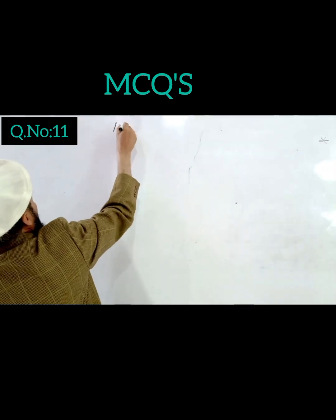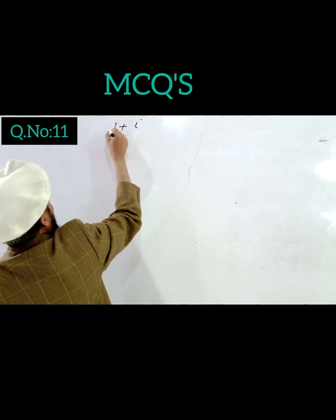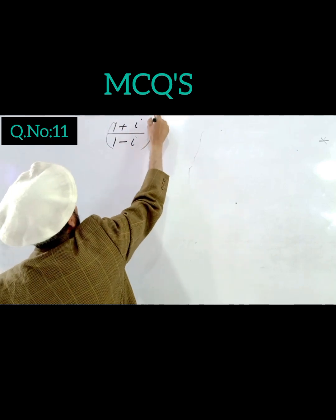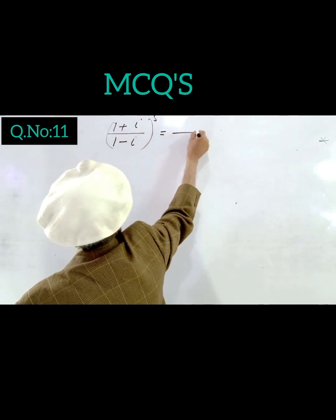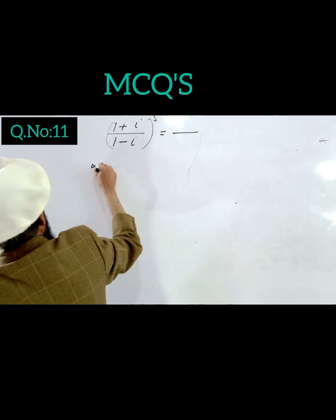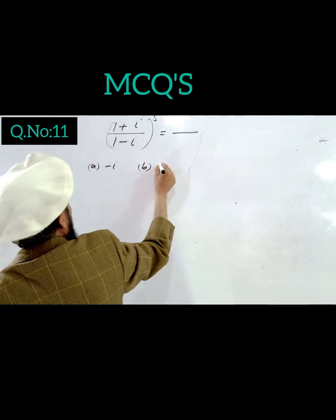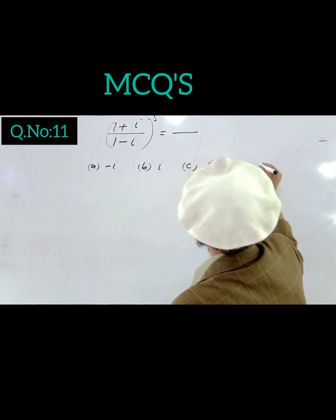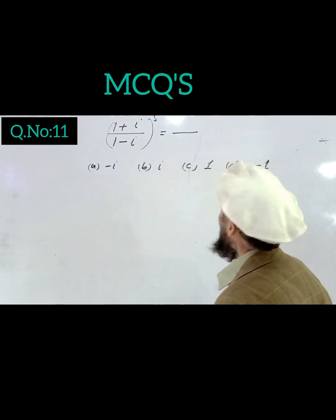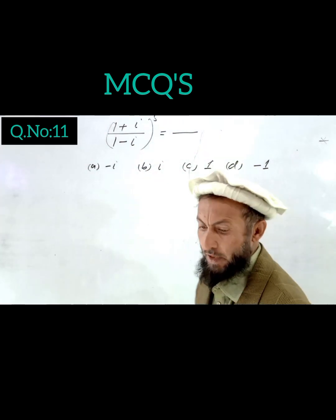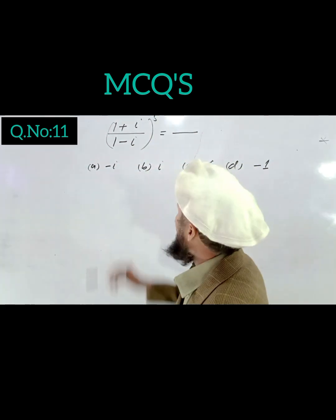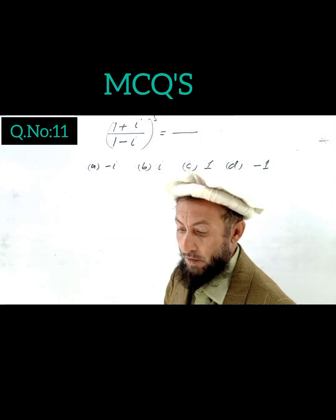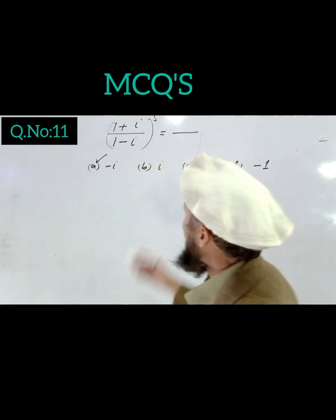Question 13: What is the result of ((1 plus iota) divided by (1 minus iota)) to the power 5? Options are: A) minus iota, B) iota, C) 1, D) minus 1. Since the power 5 is an odd number, we use the expansion approach.